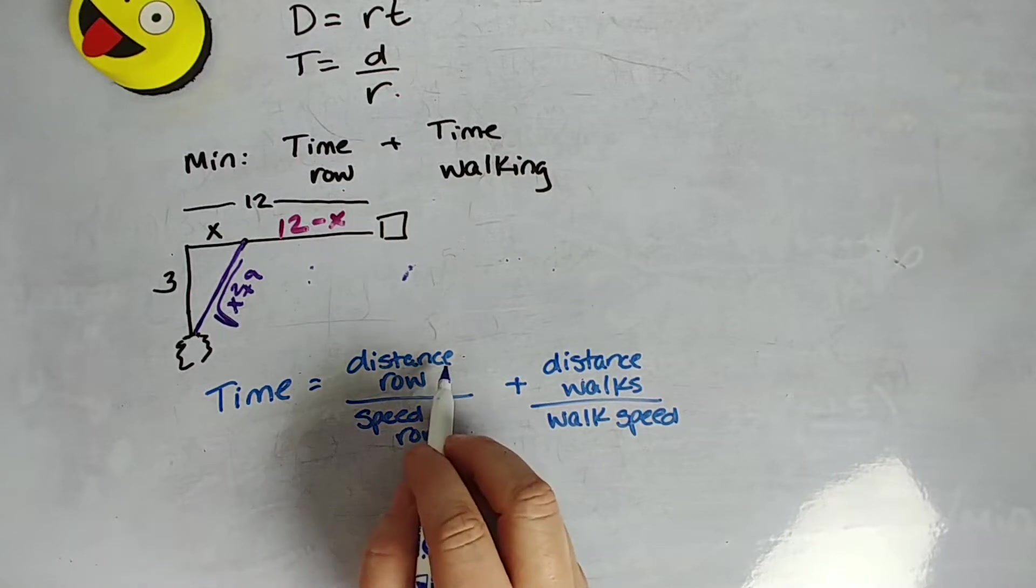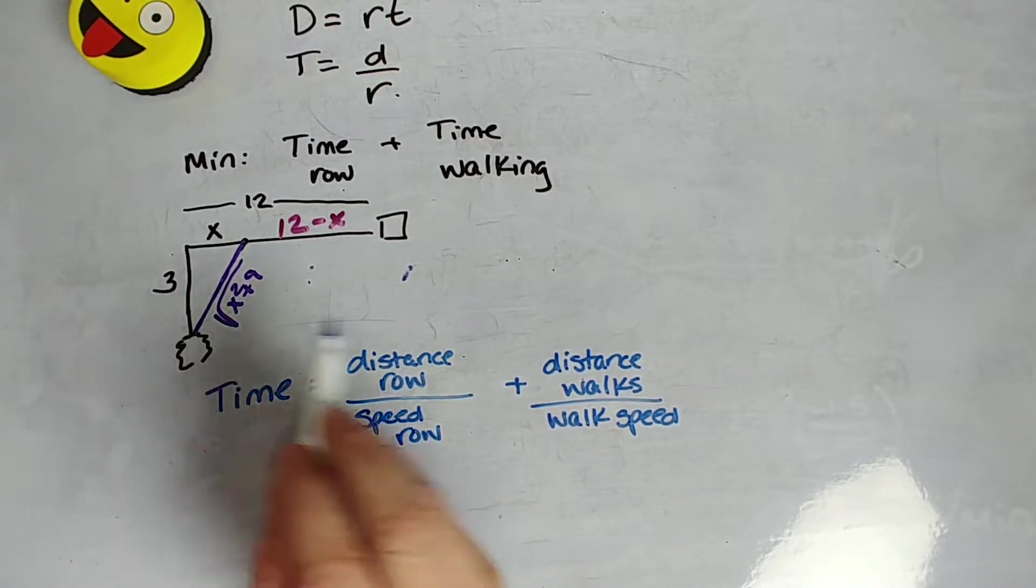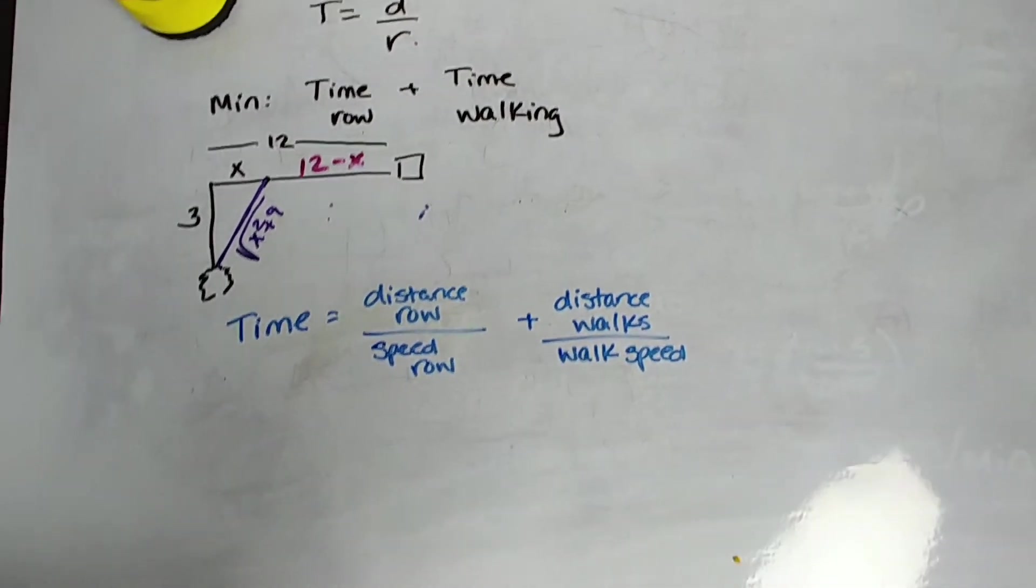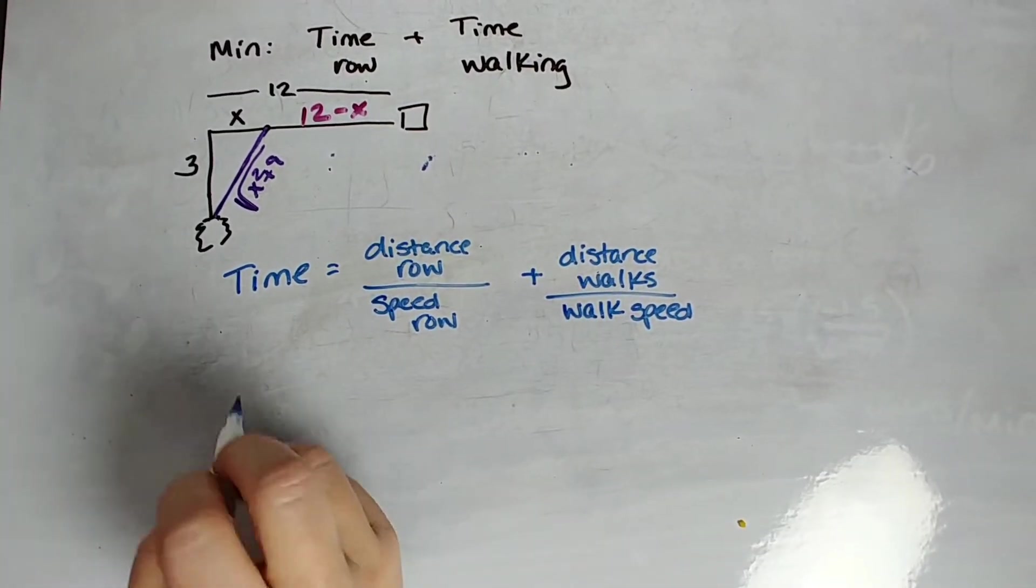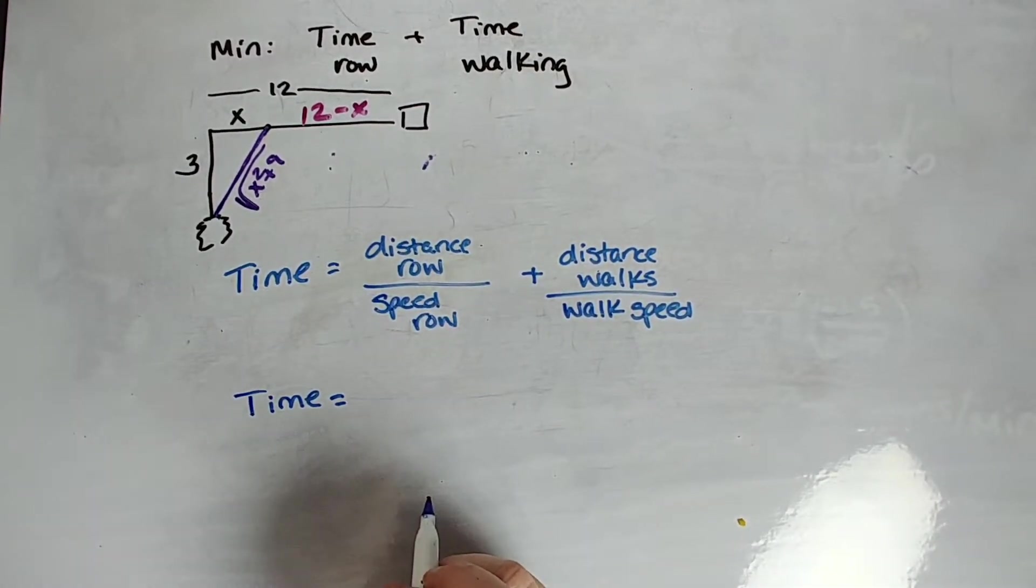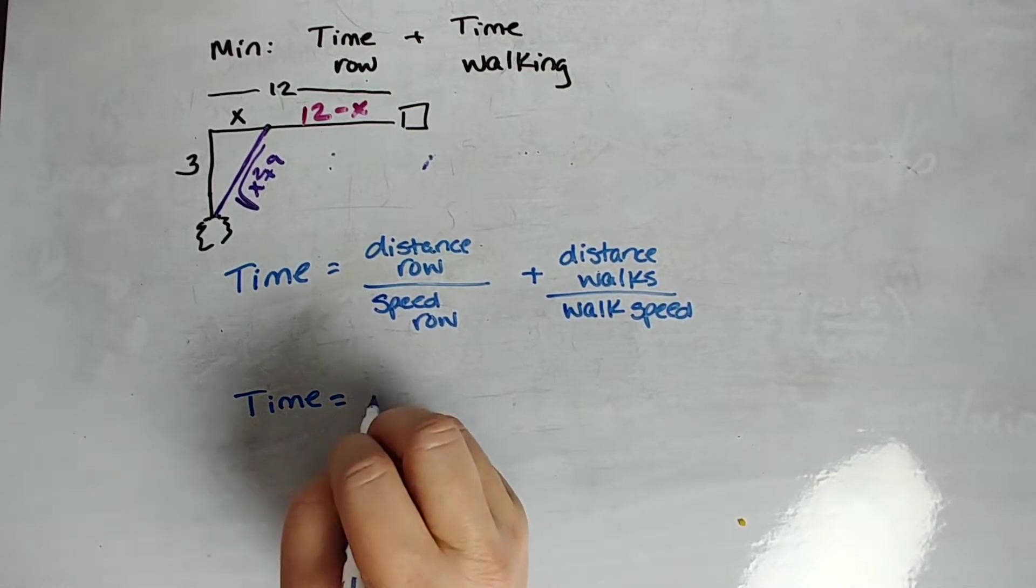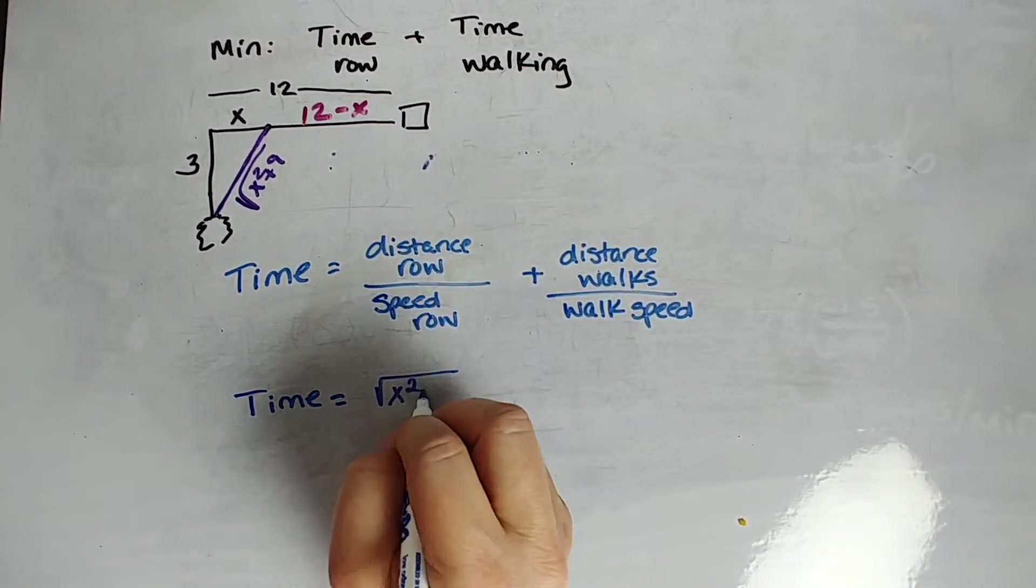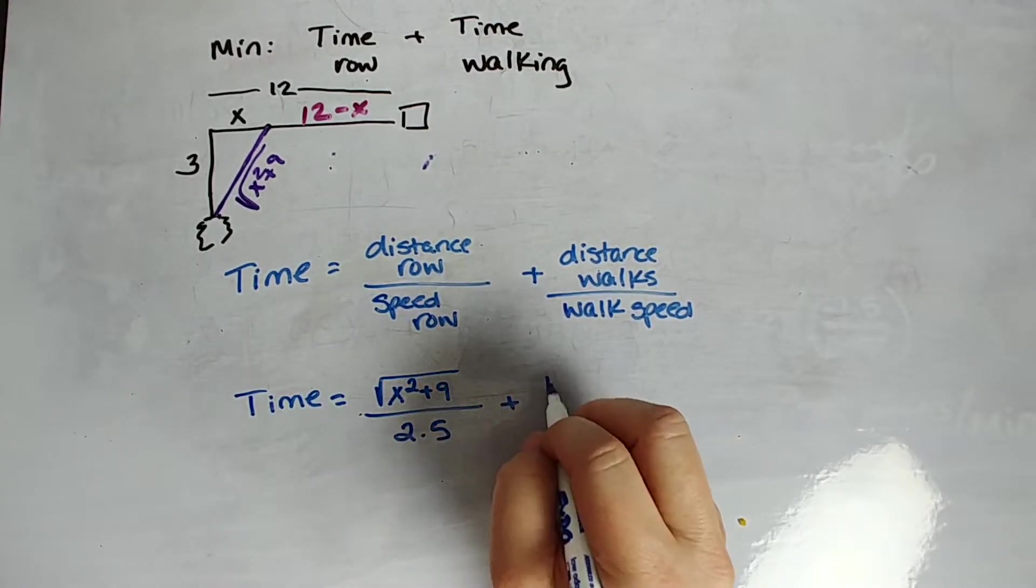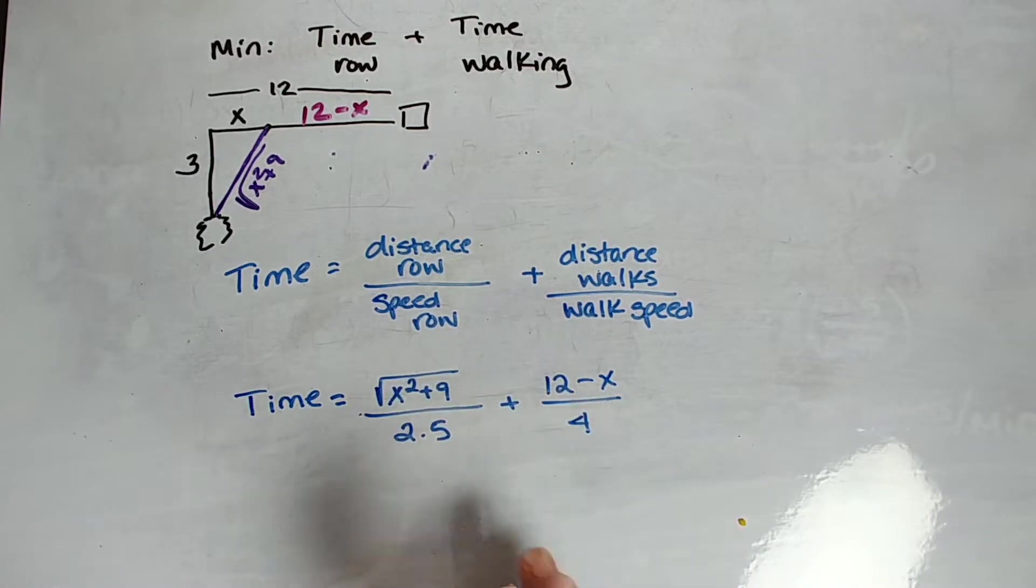So time is going to be the distance rowed all over her speed rowing, right, plus distance that she walks over her walking speed. All right, so let's go ahead and put that into some context. We know the distance that she rowed, we just figured it out, square root of X squared plus 9. We know the distance she walks, 12 minus X. The problem gave us both speeds. So we're good to go ahead and write an equation. It's not going to be a pretty equation, but we can write it.